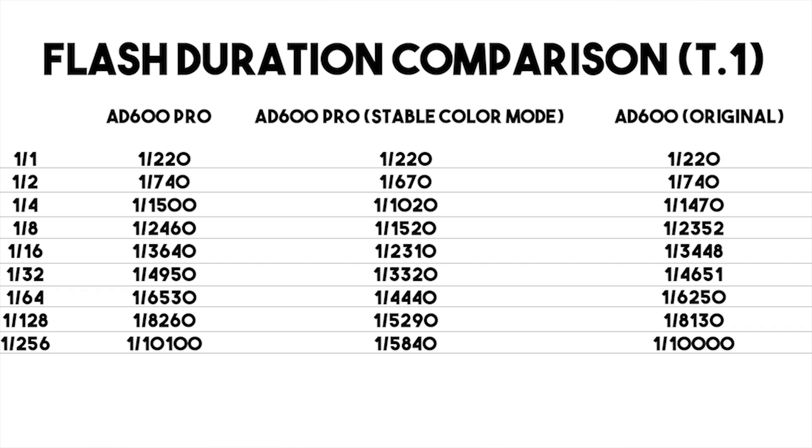The flash durations of the AD600 Pro are pretty much identical to the previous AD600, however they do go down when you enter the stable color mode. Here's a list of all the flash durations at full stop increments.